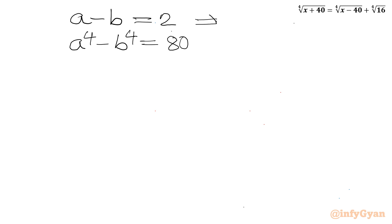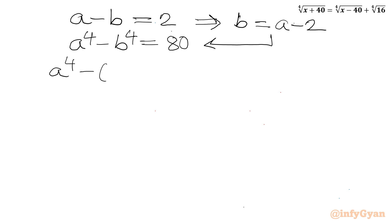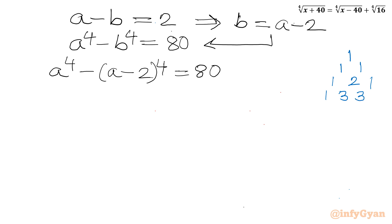From equation 1, we can write b equals a minus 2. Substituting into the second equation: a⁴ minus (a minus 2)⁴ equals 80. Now I will use Pascal's triangle and binomial expansion. For power 4, the coefficients are 1, 4, 6, 4, 1.